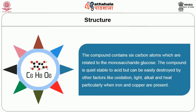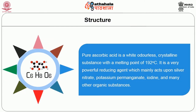Let us study about its chemical properties. The compound contains six carbon atoms which are related to the monosaccharide glucose. The compound is quite stable to acid but can be easily destroyed by other factors like oxidation, light, alkali and heat, particularly when iron and copper are present. Pure ascorbic acid is a white, odorless, crystalline substance with a melting point of 192 degrees Celsius. It is a very powerful reducing agent which mainly acts upon silver nitrate, potassium permanganate, iodine and many other organic substances.